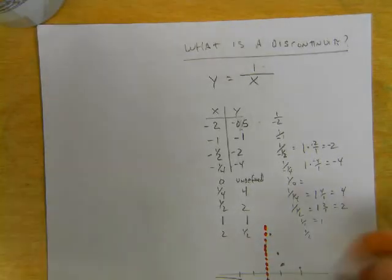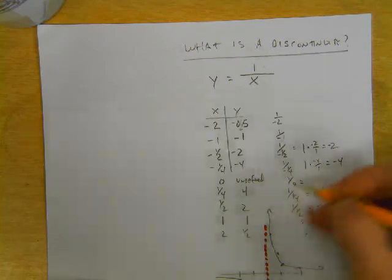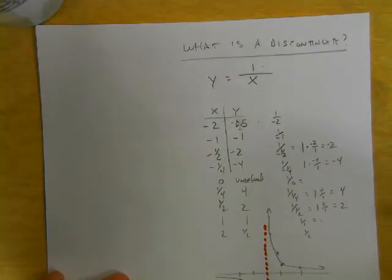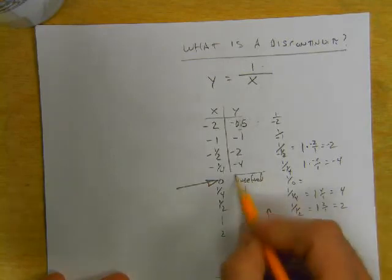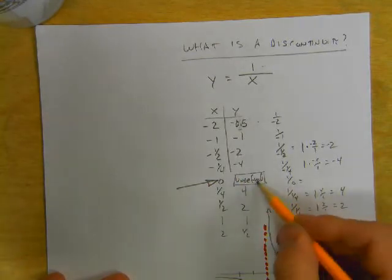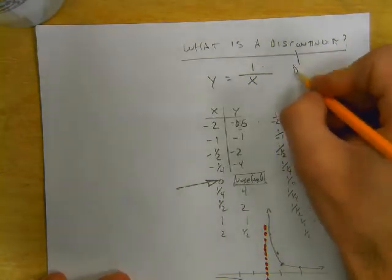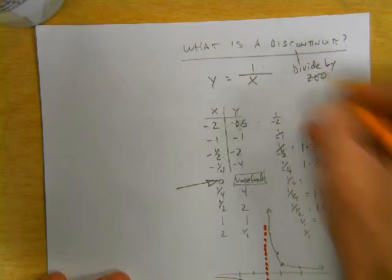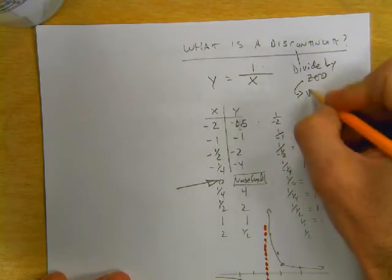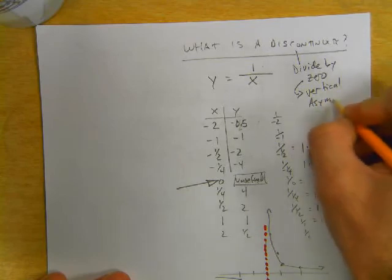And it looks like we have a function that goes like this. So what is a discontinuity? A discontinuity occurs when you divide by 0 and you get undefined. So discontinuity is a divide by 0. And when that happens, you end up with a vertical asymptote.